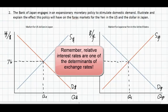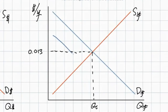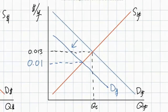However, a greater money supply in Japan will lead to lower Japanese interest rates, which does impact the market for yen and dollars. As we learned in a previous video lecture, relative interest rates are a determinant of exchange rates. If Japanese interest rates fall, foreign investors will demand fewer Japanese yen because the rate of return on investments in Japan has decreased. The demand for Japanese yen will fall, putting downward pressure on the value of the yen. Let's say the yen now only costs American investors $0.01 US dollars compared to the previous rate of $0.013.